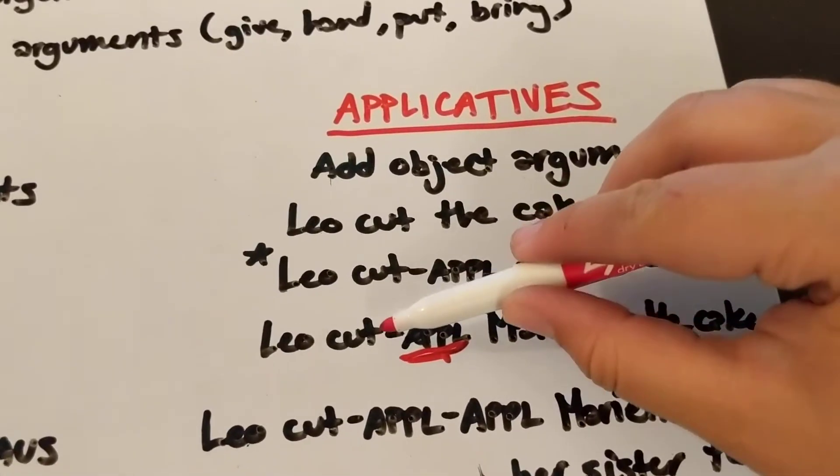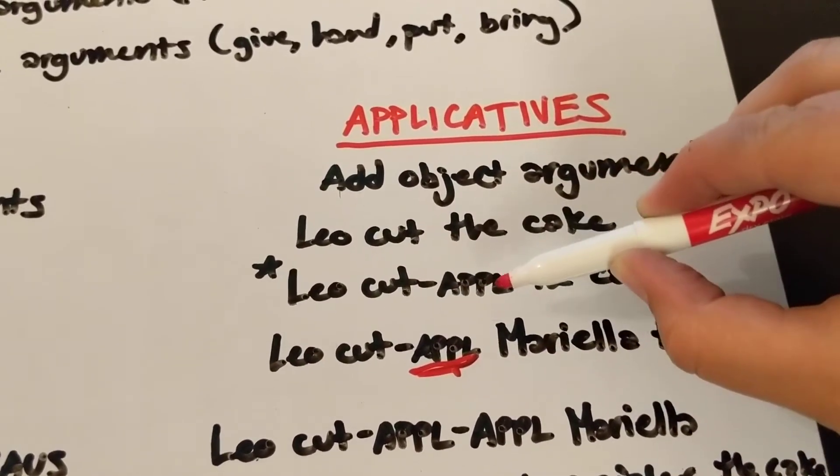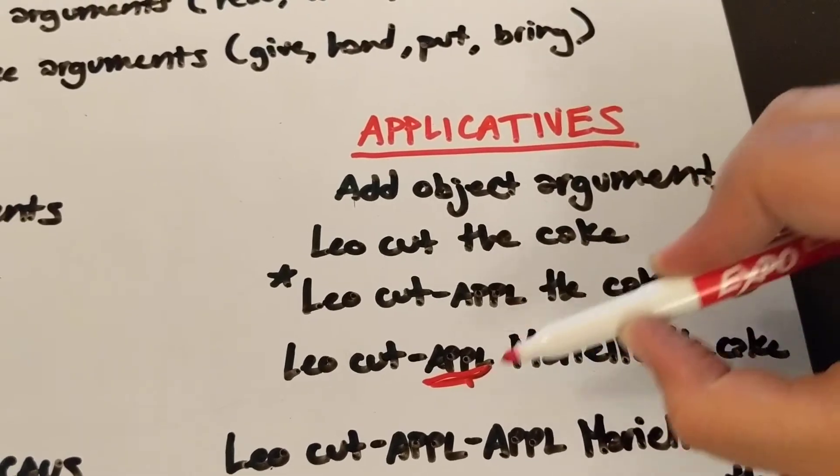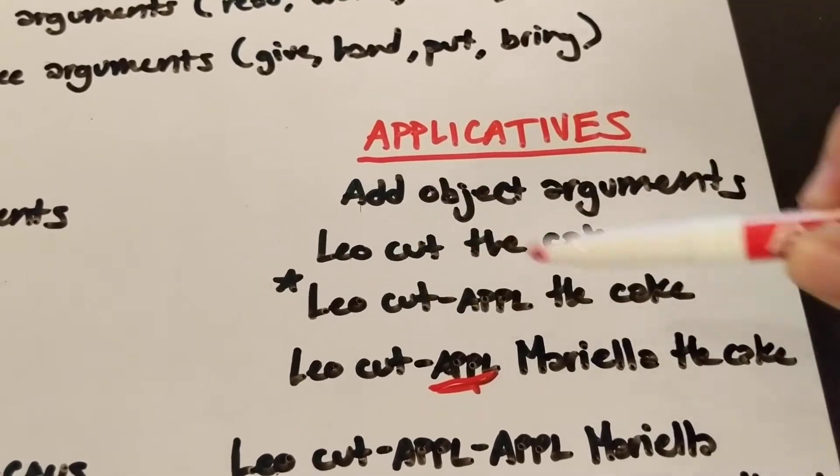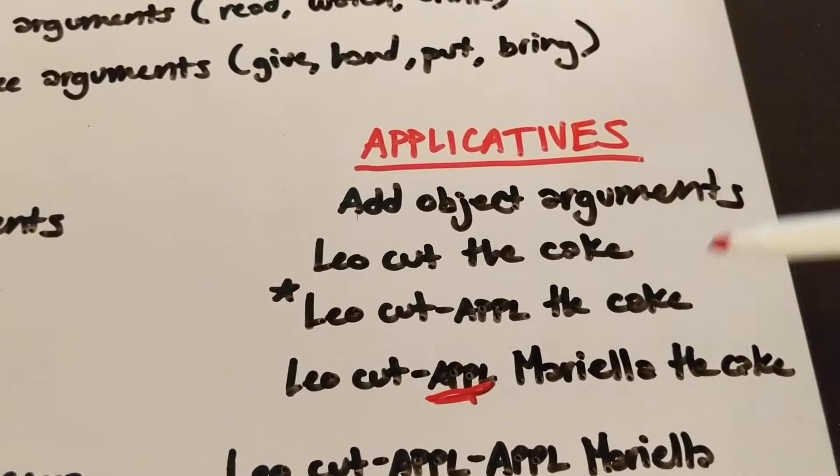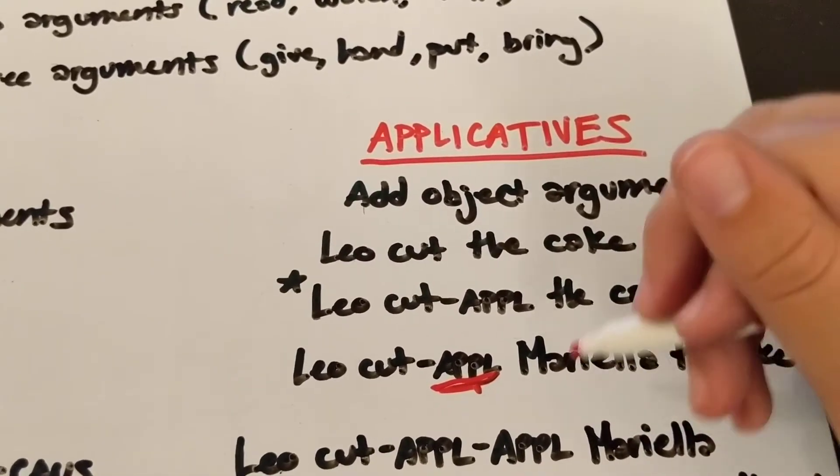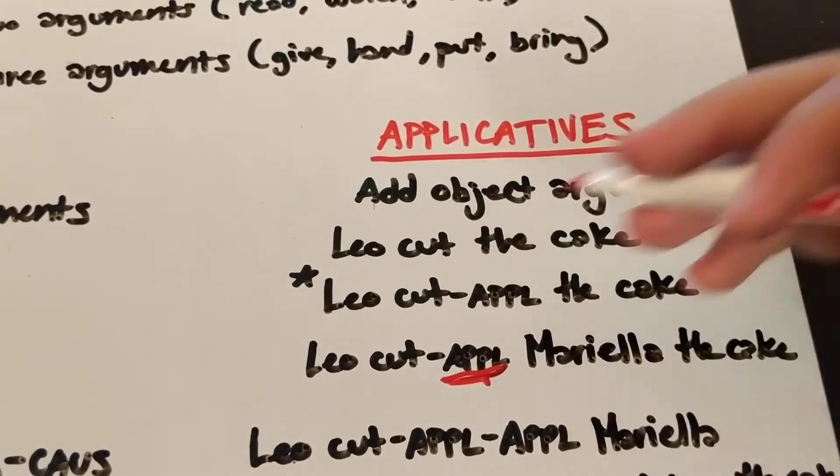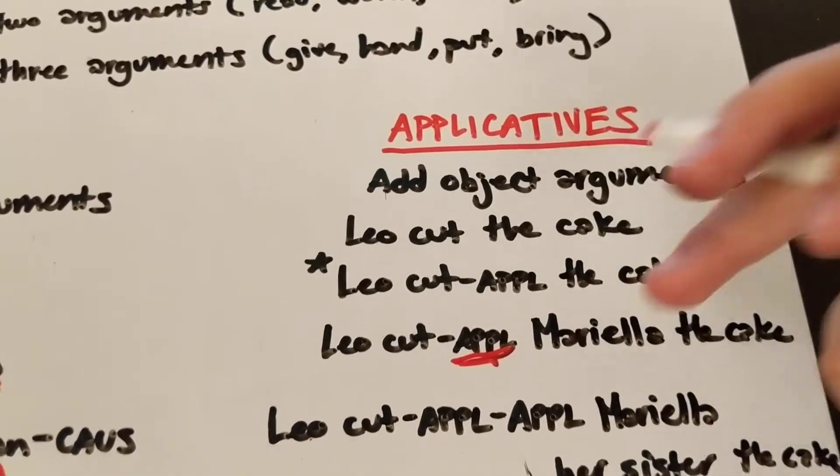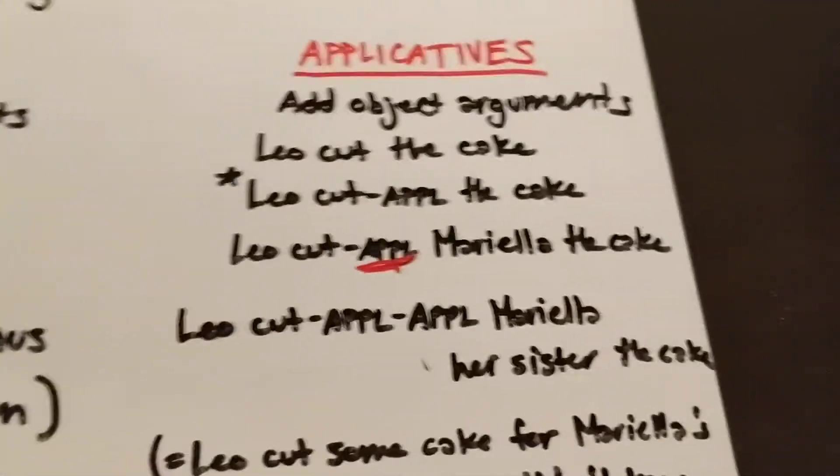In English, we can just use a zero applicative is what it's called in a lot of cases, which is what lets us say Leo cut the cake and Leo cut Mariela the cake. And we just assume that this means Mariela is the recipient or the beneficiary or something like that. There's some reason he's cutting the cake for Mariela.